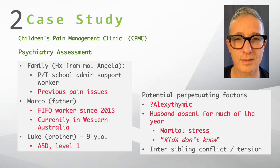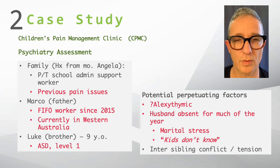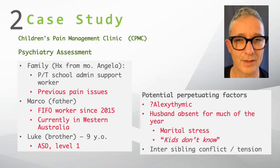Angela insists that the kids don't know about the marital stress. We often find that's not actually the case — while they may not know the specifics, they certainly know that their parents' relationship is not the same as before, and it does have some kind of emotional impact on them. In relation to Luke and Taylor, there is some sibling conflict. Mum puts this down to Taylor just being a bit jealous of the lack of attention she's getting in comparison to Luke.